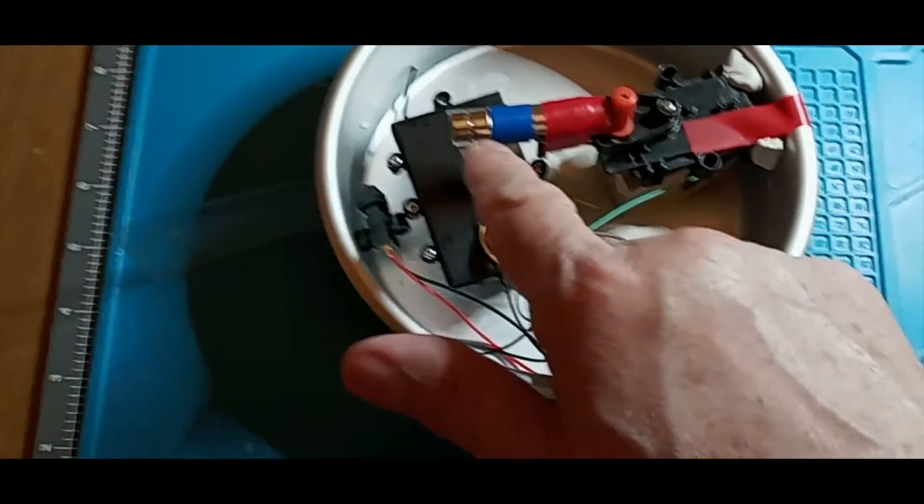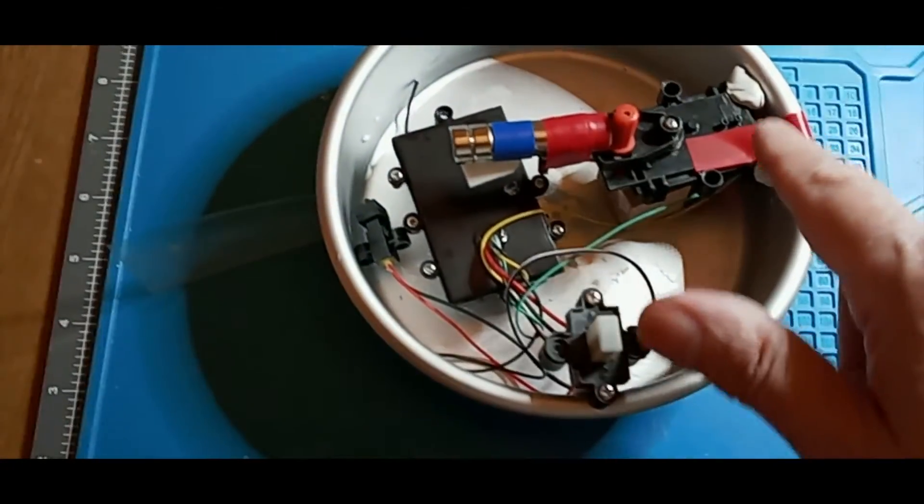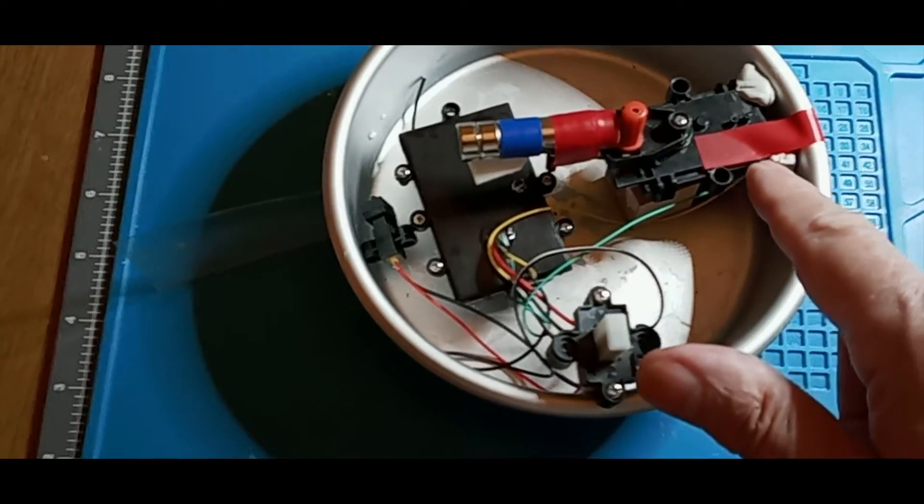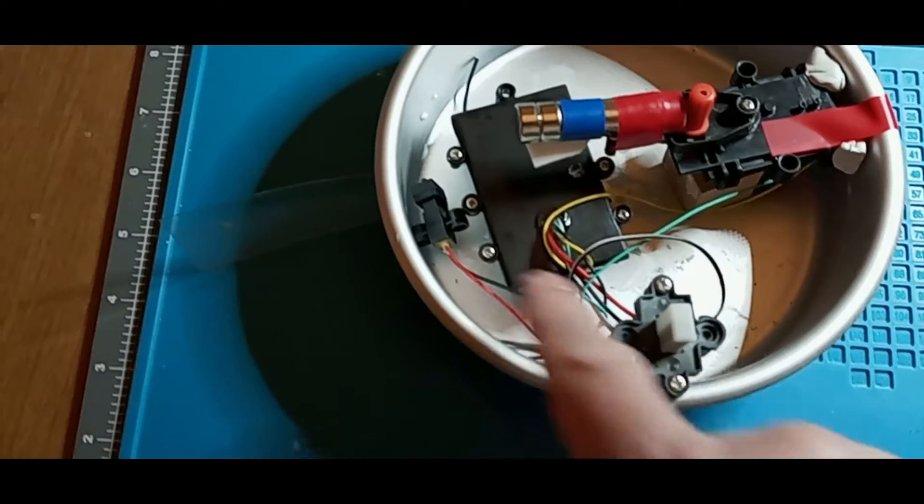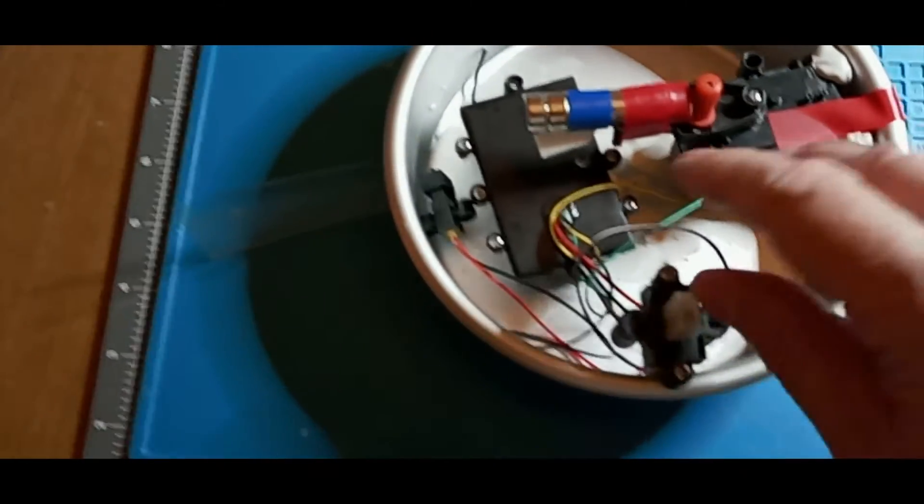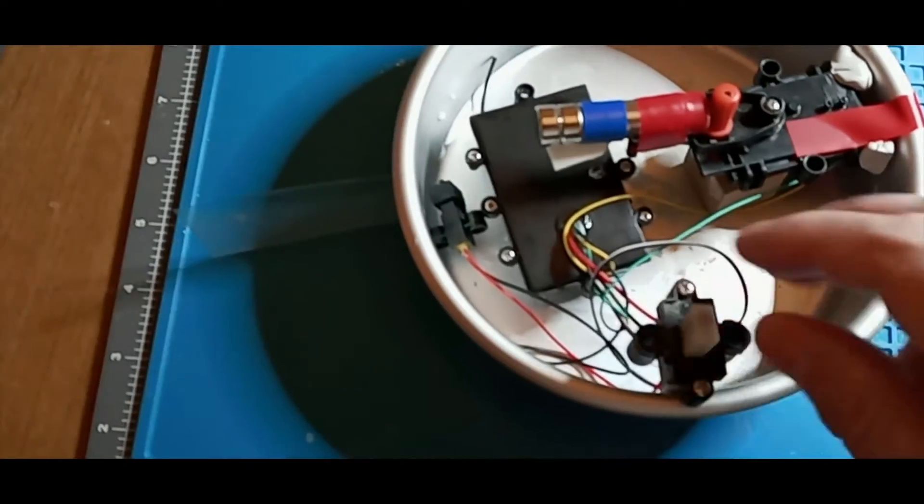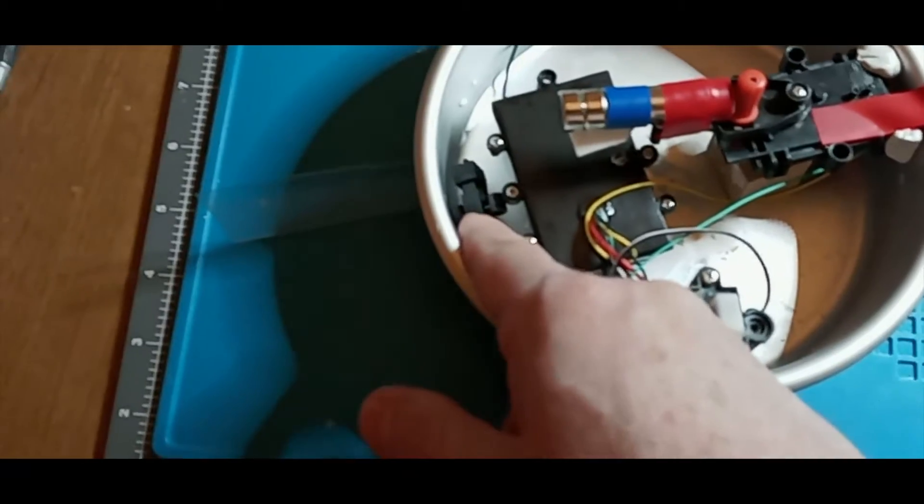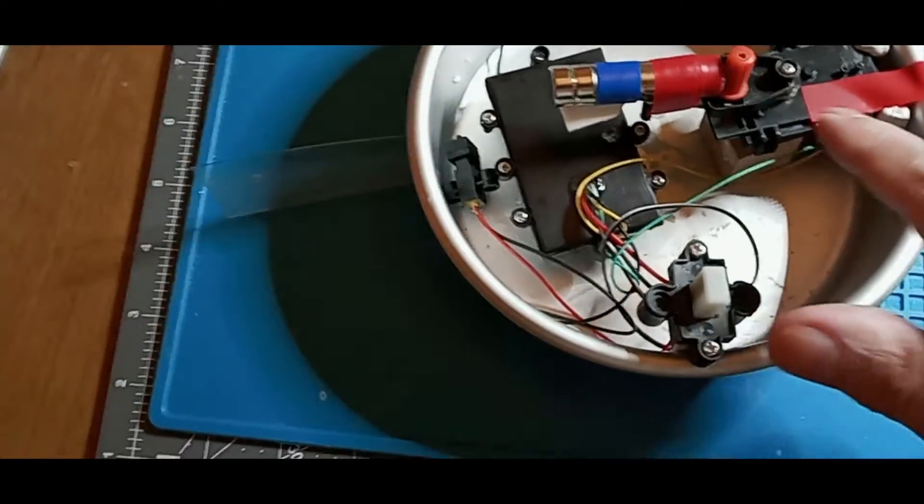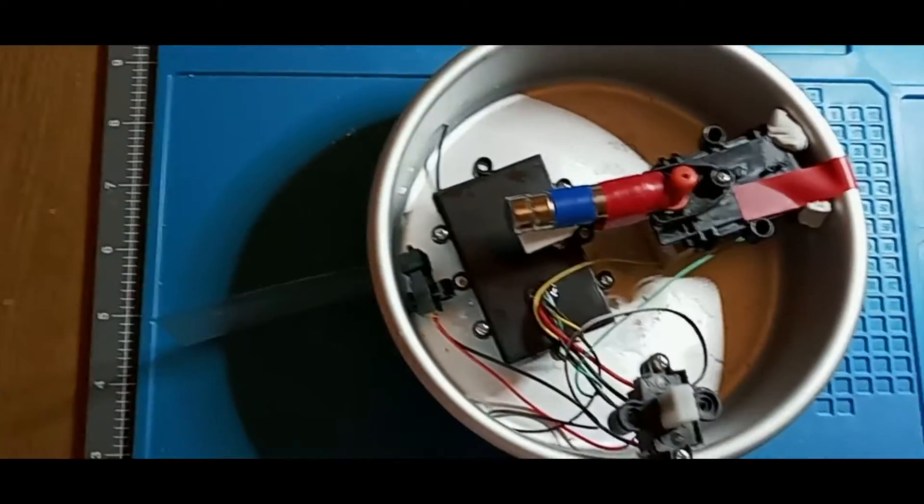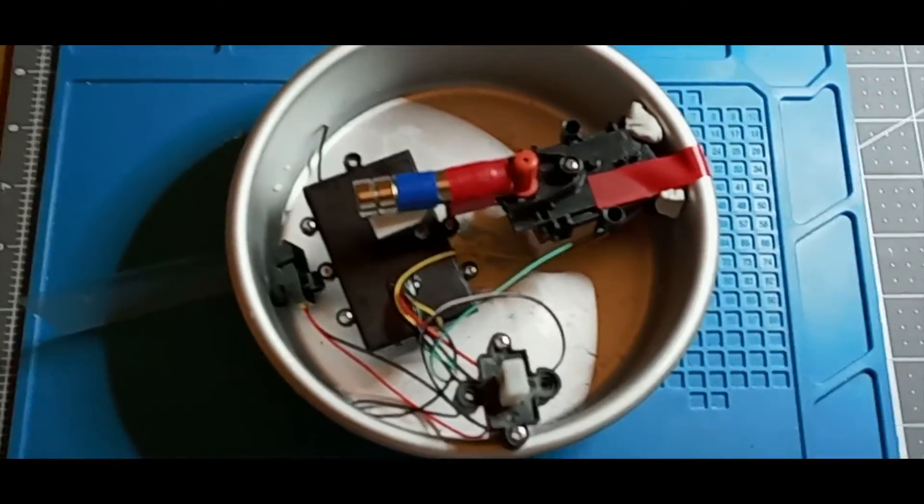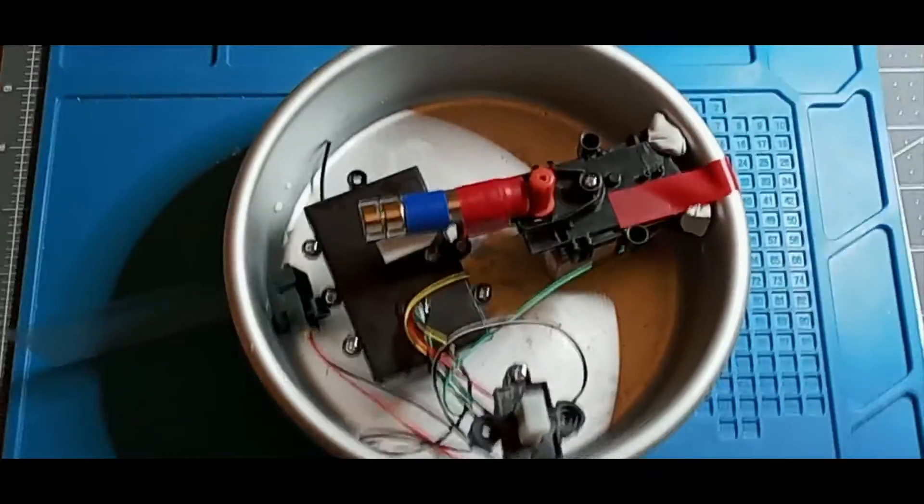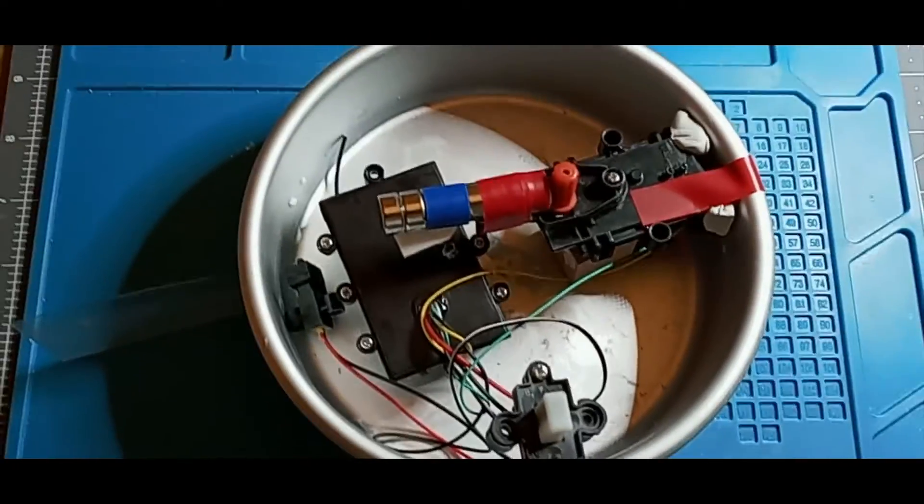It's all taped together and held with some putty and double-sided tape. That's the original battery, on-off switch, charging port, and servo. All the wires are connected. All I did was cut the wires to the motor, so I removed the motor.